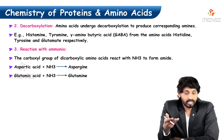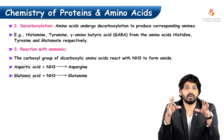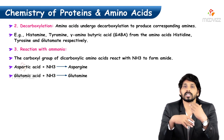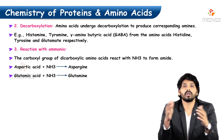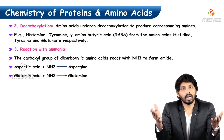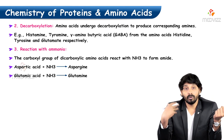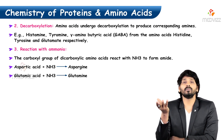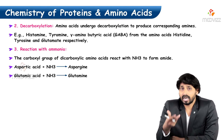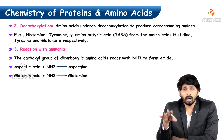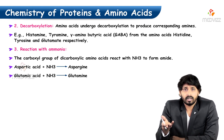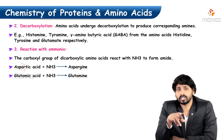Decarboxylation — the name itself means removal of the carboxylic group, removal of CO2. Amino acids undergoing decarboxylation produce the corresponding amine. When you remove the carboxylic group from histidine, it becomes histamine. Removing it from tyrosine gives tyramine. Removing it from glutamic acid gives GABA — gamma amino butyric acid. Histamine is significant in allergic reactions.